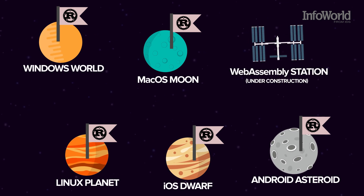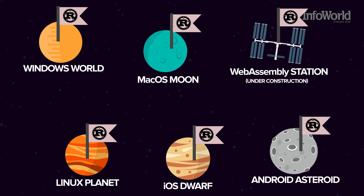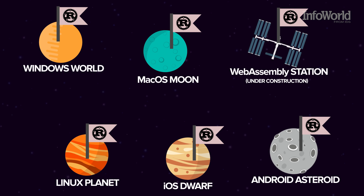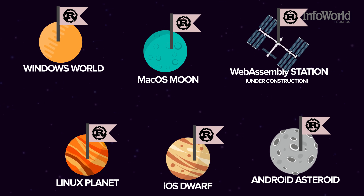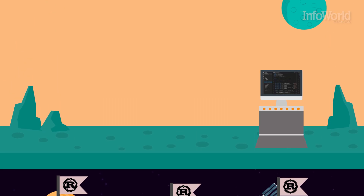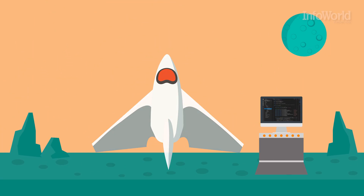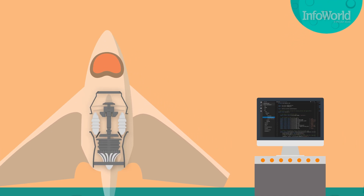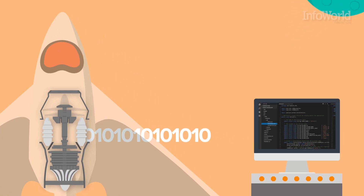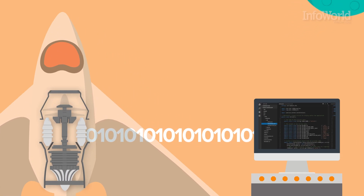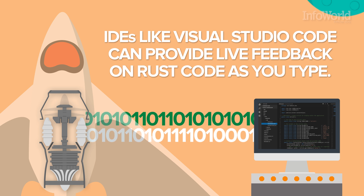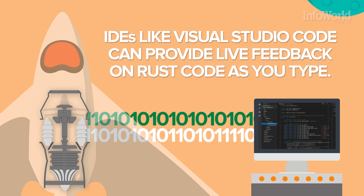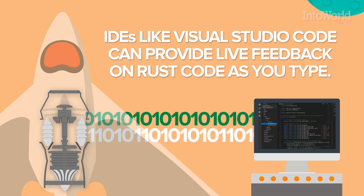You can even compile to WebAssembly, the next-generation binary format for browser-based apps. Rust's toolchain works hand-in-hand with the modern tools developers expect to use today. In fact, popular IDEs like Visual Studio Code can provide live feedback on Rust code as you type.